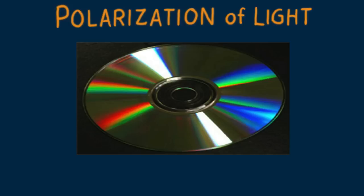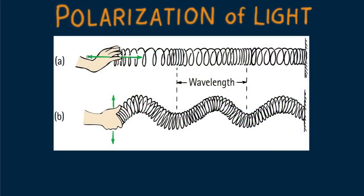Interference and diffraction provide the best evidence that light is wave-like. As we learned earlier, waves can be either longitudinal or transverse. Sound waves are longitudinal, where vibratory motion is along the direction of wave travel.